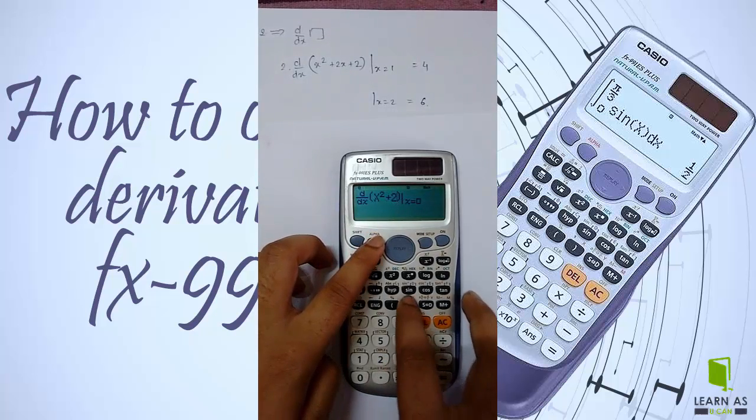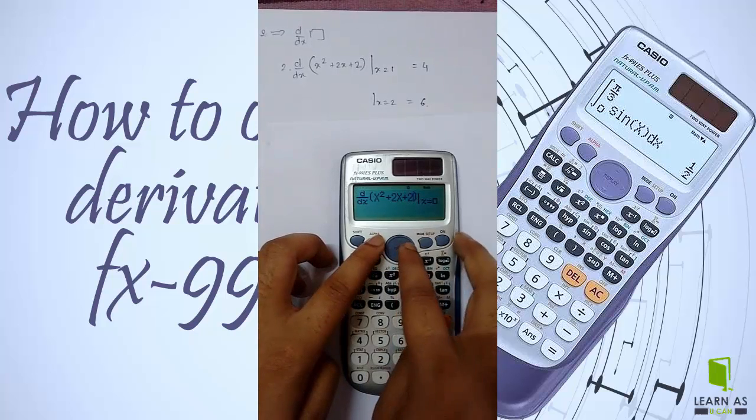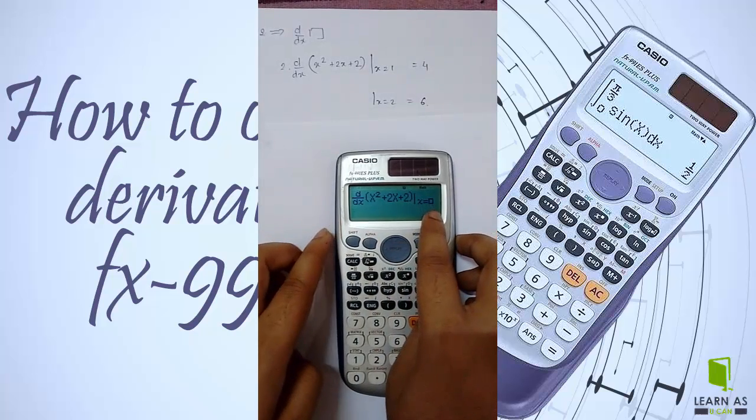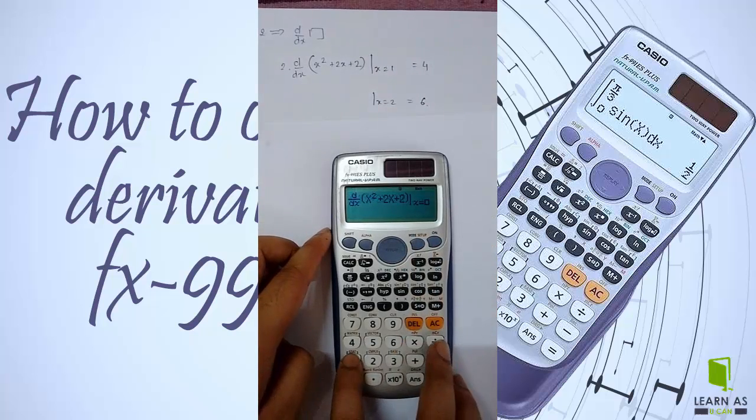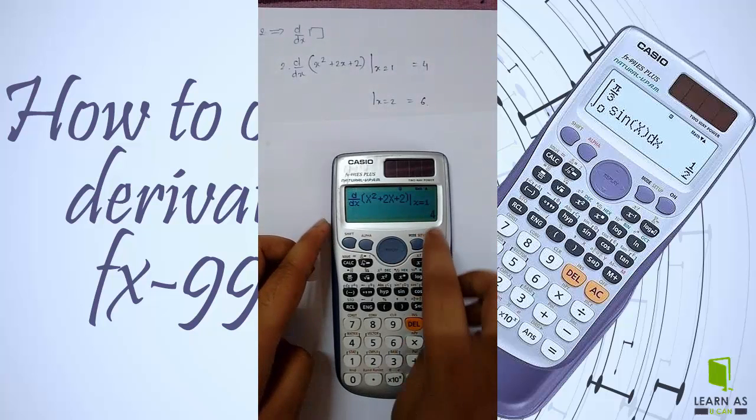...2x plus 2. Now the calculator is asking for the x value, so I'm entering 1. The result is 4.